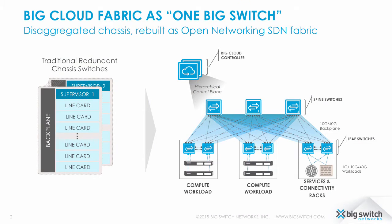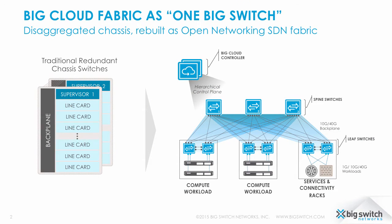The easiest way to understand the Big Cloud Fabric is by comparing it to a large chassis-based switch. The switch has three essential components: a supervisor or control plane, line cards, and a backplane interconnecting the line cards.